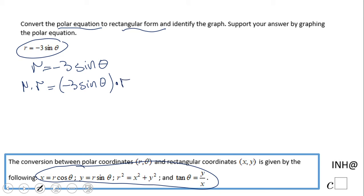R times R is R squared, and here let's rearrange this product. We end up with negative 3R sine of theta. Now let's take a look. We have two equations that we can use.